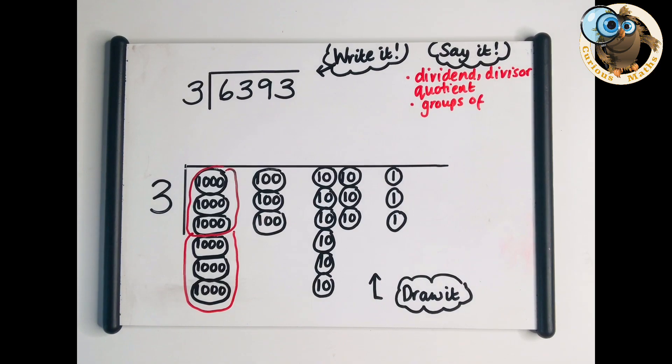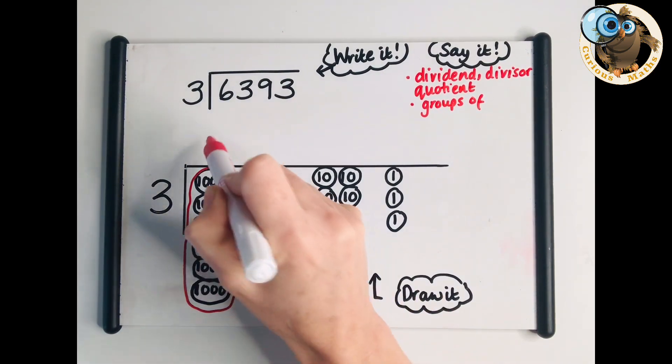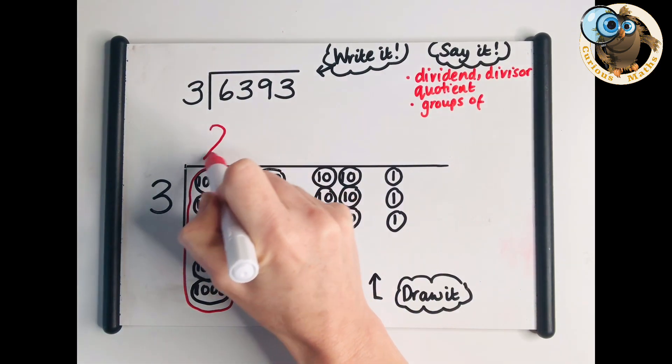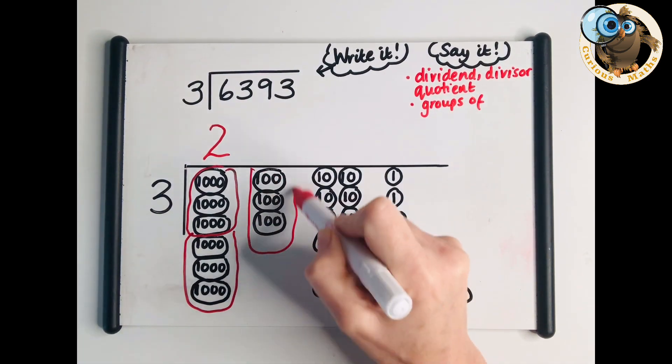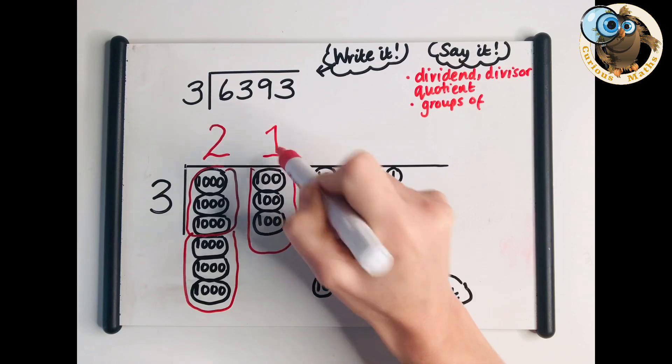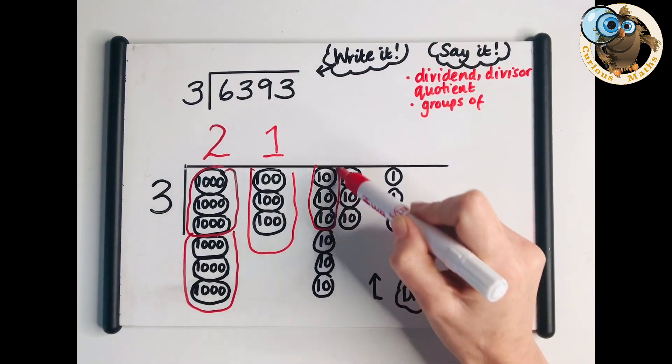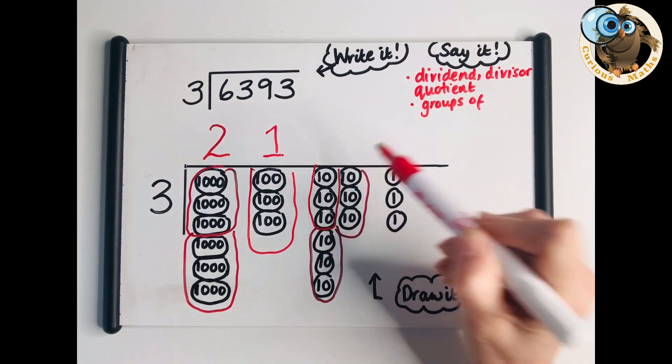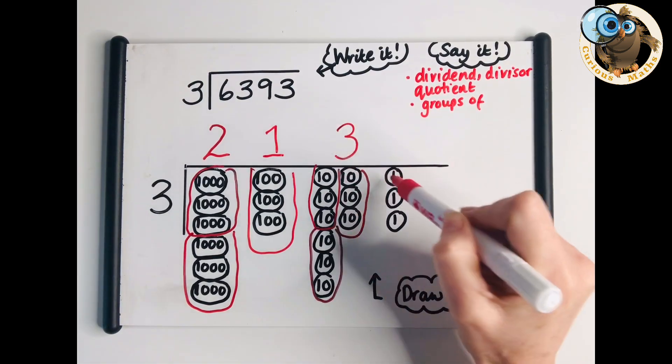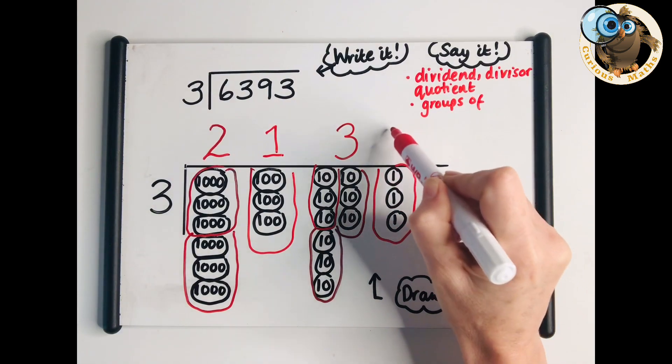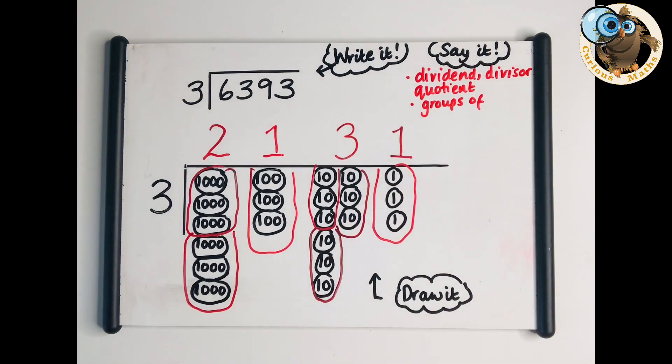We can still put them into threes. We ask how many groups of three have we got? We have two groups of three. Next we go to our hundreds column and do the same. We have one group of three. To our tens - we can arrange our grouping any way we like. We have three groups of three. And we have one group of three. Using it as a model, it is very straightforward and children can pick this up really quickly.